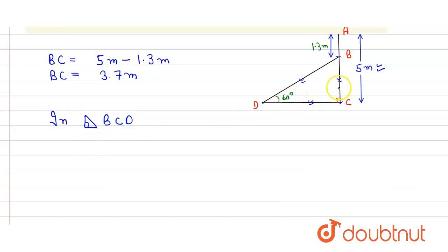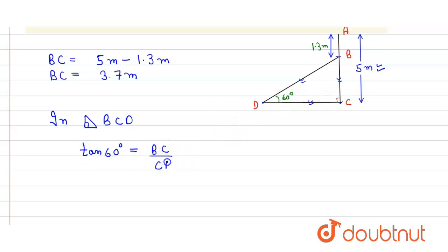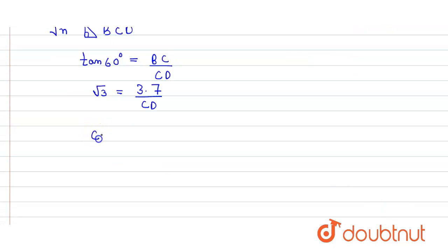In right angle triangle BCD, we first apply tan 60 degrees. Tan 60 degrees equals perpendicular divided by base. The perpendicular is BC, so tan 60 degrees equals BC divided by CD. We put the value: root 3 equals 3.7 divided by CD. So we get the value of CD.